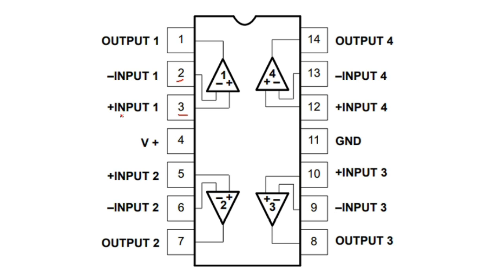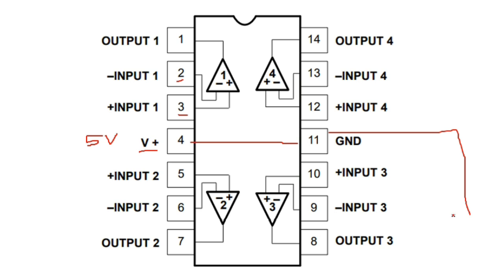We have input one-plus and input one-minus, because an amplifier always has two inputs — a minus input and a plus input — and this is the output. The fourth pin is V-plus, meaning the supply voltage, for example five volts. And here we have the ground pin, connected to digital ground. So this is power and this is ground.